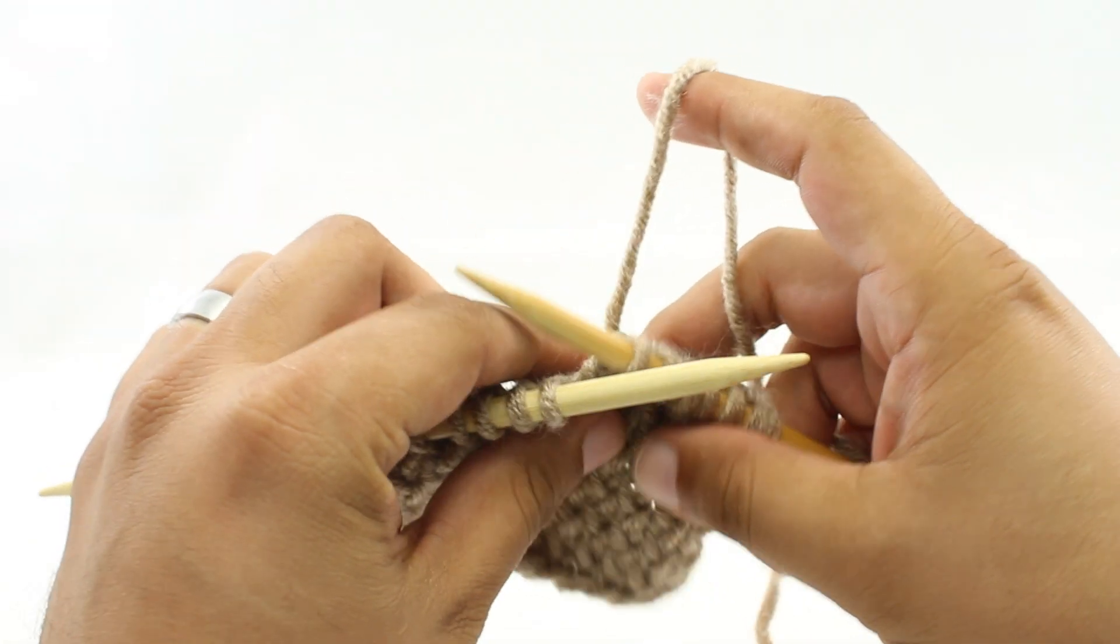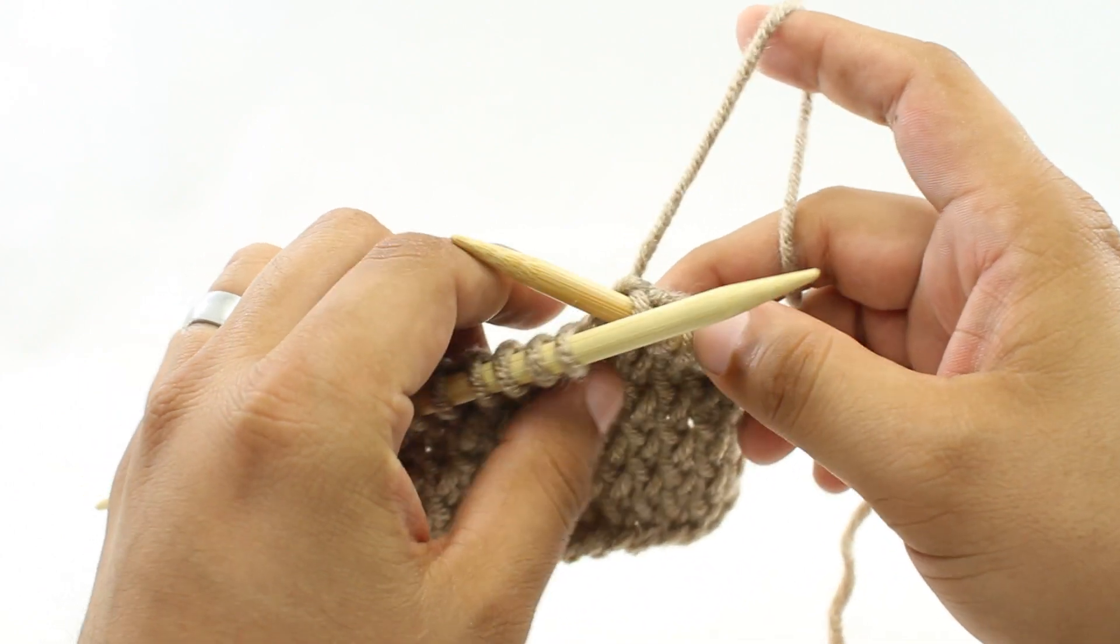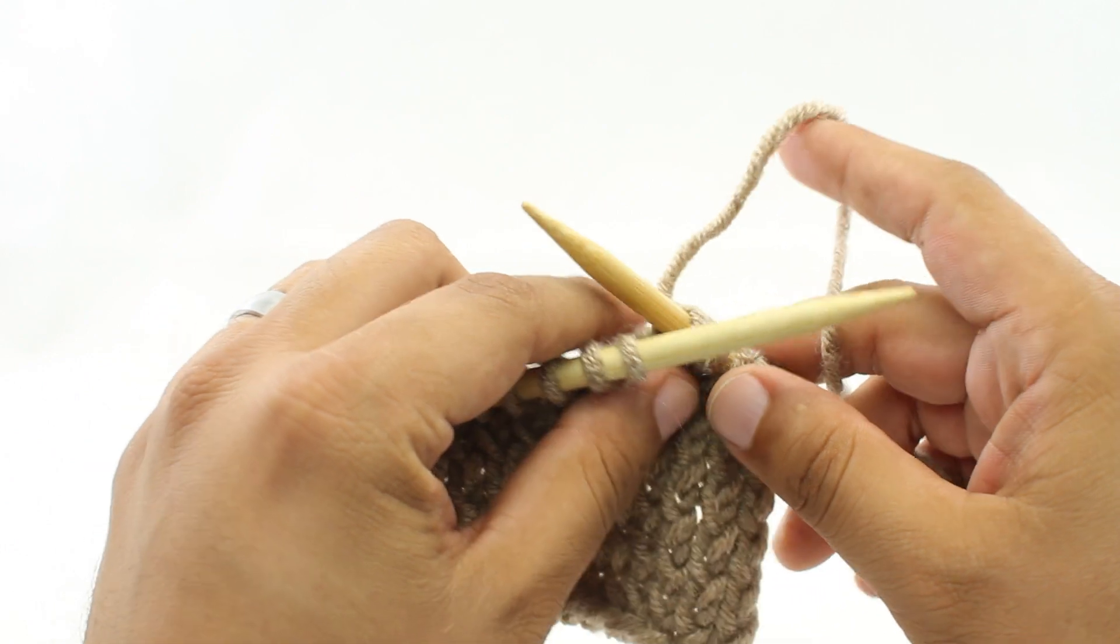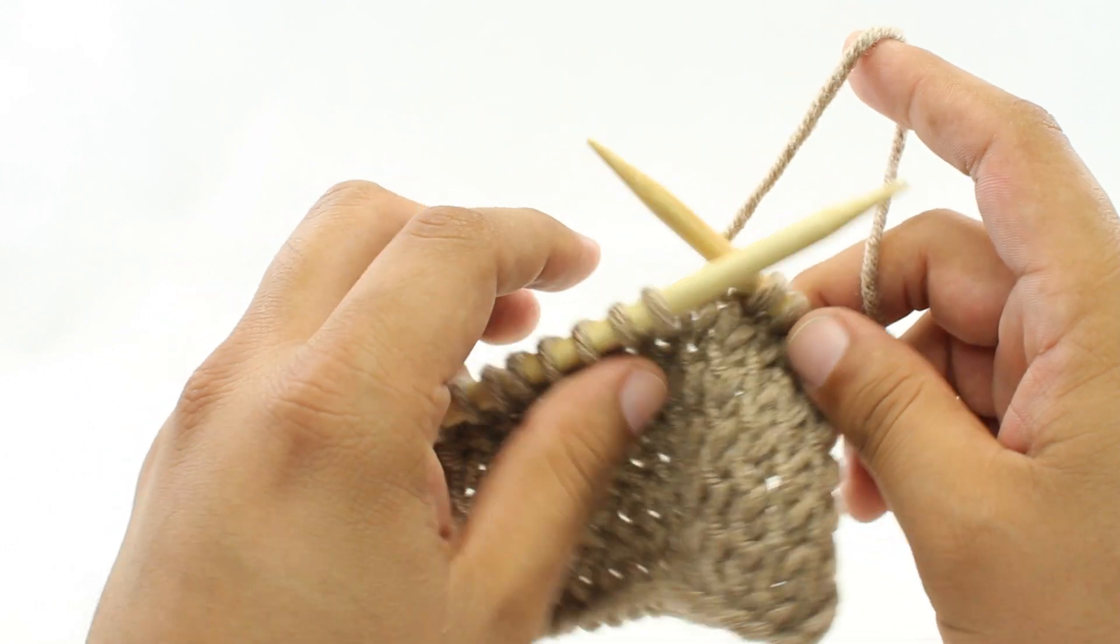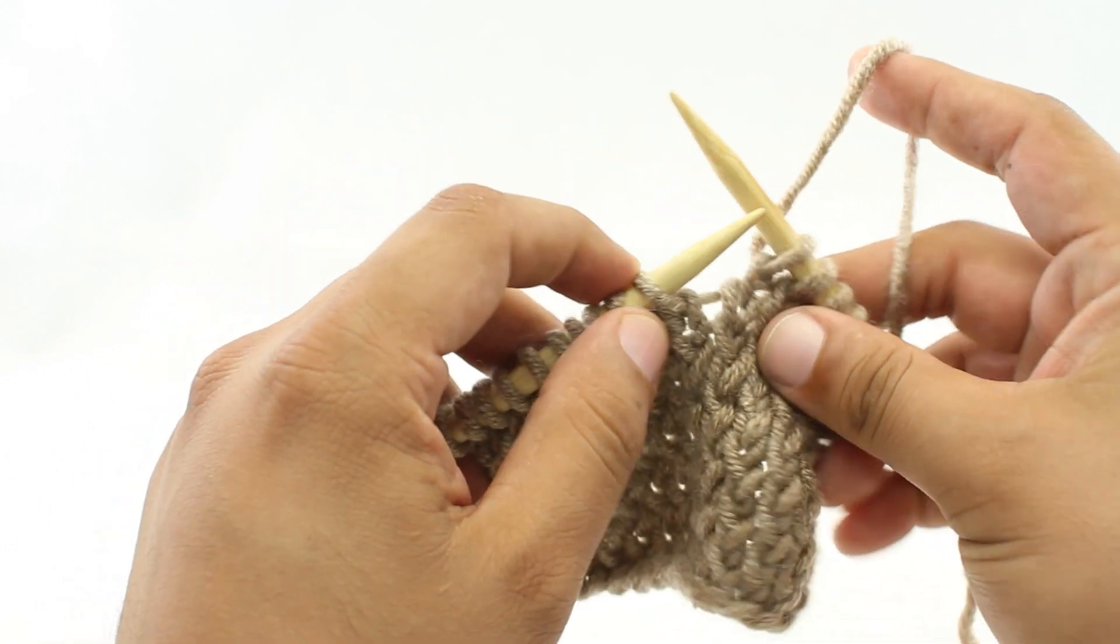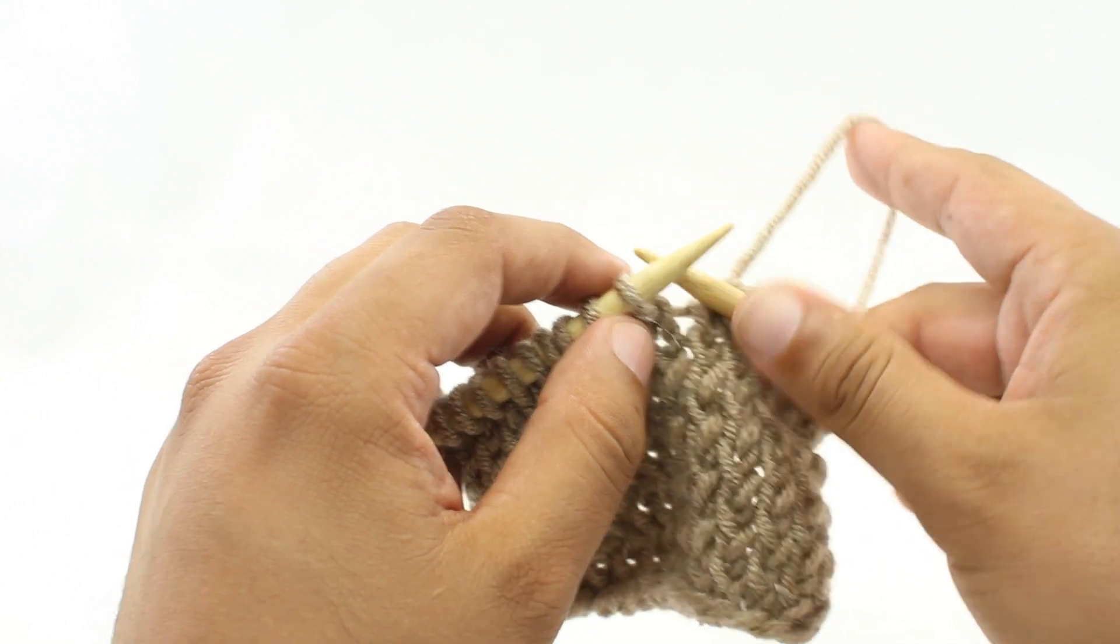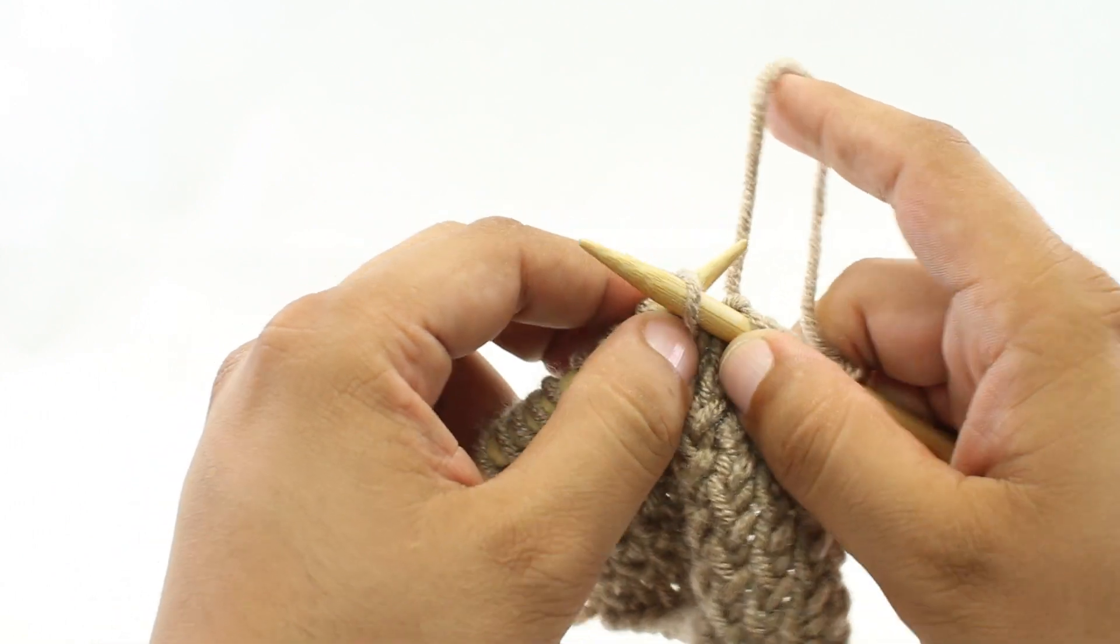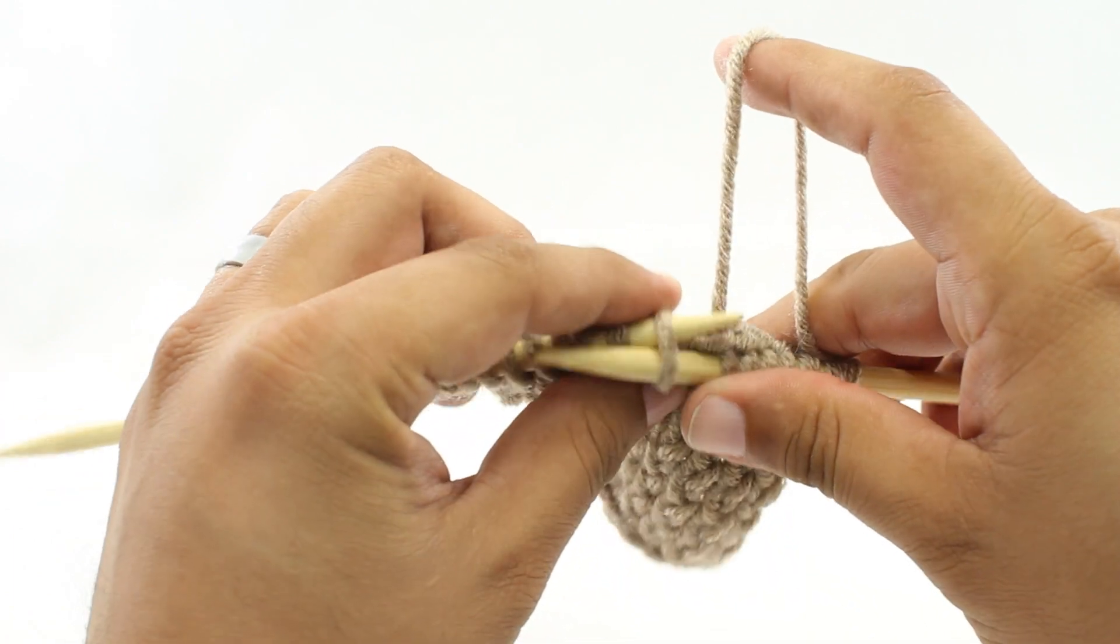Now sometimes in your pattern you'll come across an abbreviation that says WYIB. And this stands for with yarn in back. This most often is going to be encountered when you are slipping a stitch and they want you to keep the yarn behind the work.